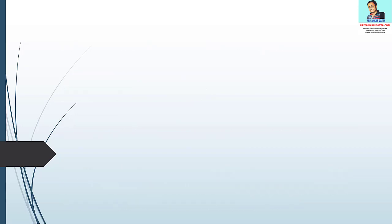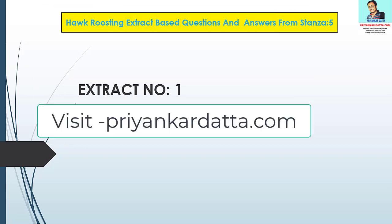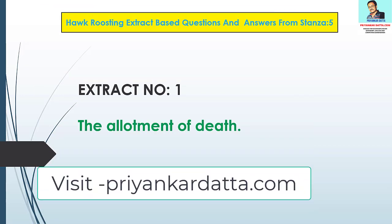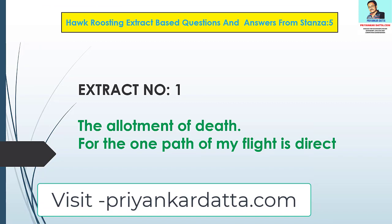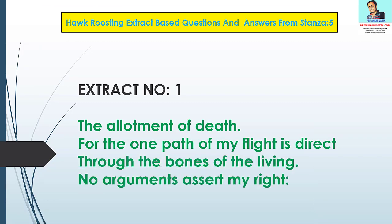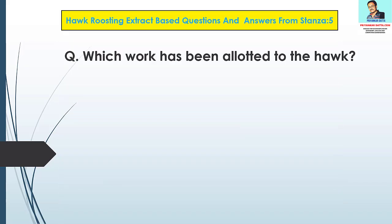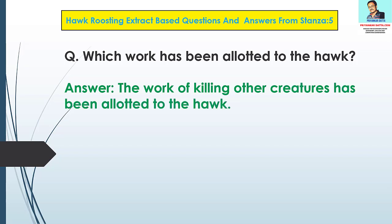Hawk Roosting extract based questions and answers from Stanza 5. Extract number one: 'The allotment of death. For the one path of my flight is direct through the bones of the living. No arguments assert my right.' Question 1: Which work has been allotted to the hawk? Answer: The work of killing other creatures has been allotted to the hawk.